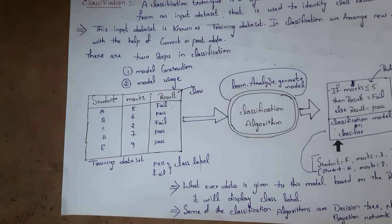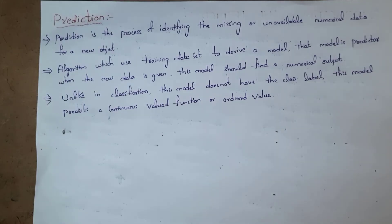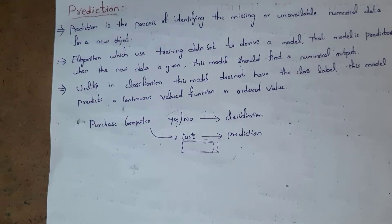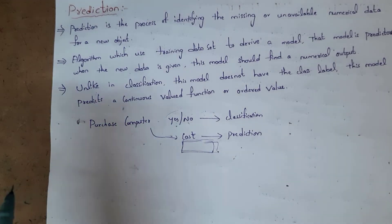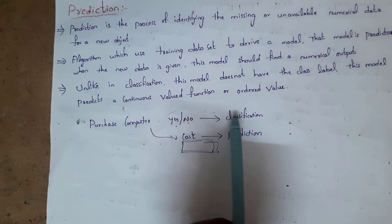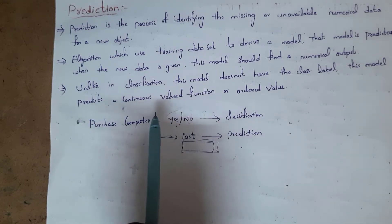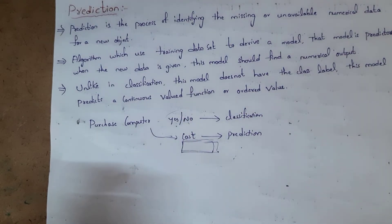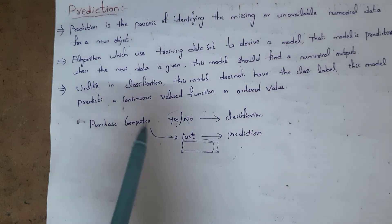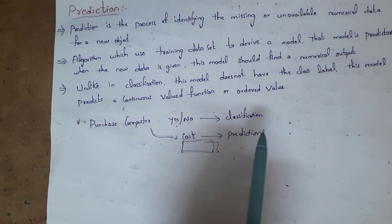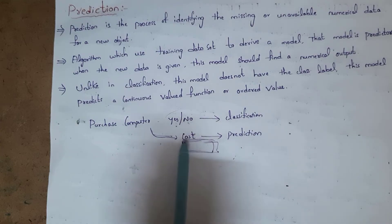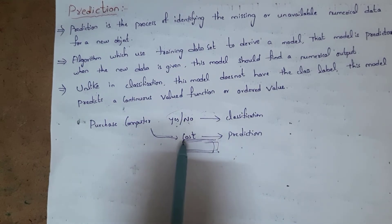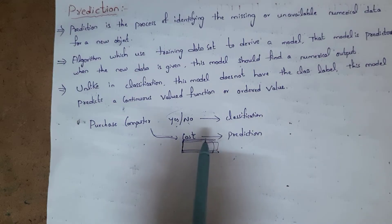The next topic is prediction. Prediction is the process of identifying missing or unavailable numeric data for a new object. In classification we find a class label — that is true or false, pass or fail, yes or no. For example, if a person wants to purchase a computer, whether they will purchase it or not — yes or no — is classification. But how much cost that person is going to spend to purchase the computer is prediction, because we are predicting the cost. The cost is a missing value that we are finding.